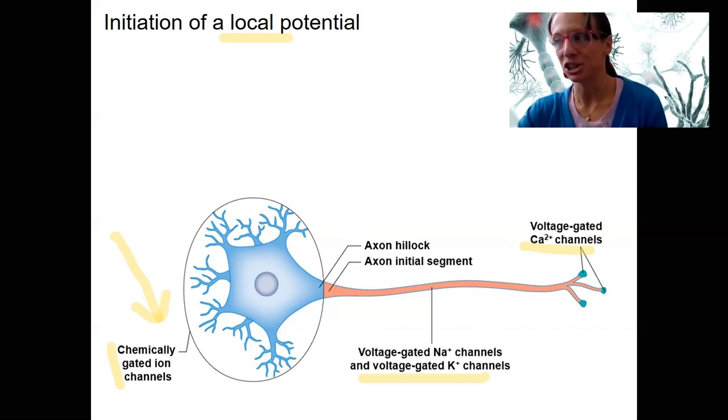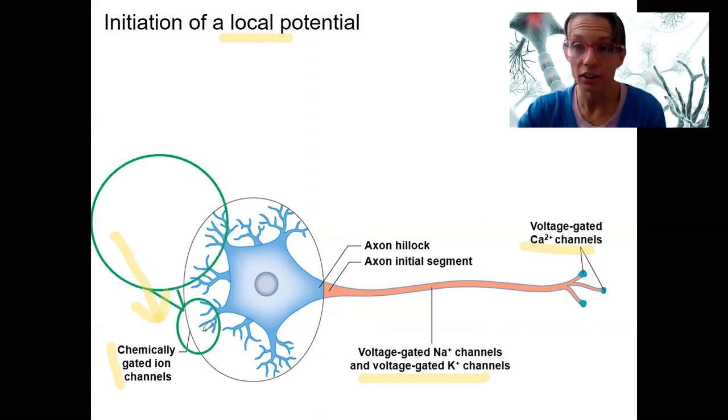Not every time, but potentially. So let's zoom in to a little piece to the dendrite here. Let's see what is located here. I've already told you, right? Chemically gated ion channels are located there. Let's look at those.